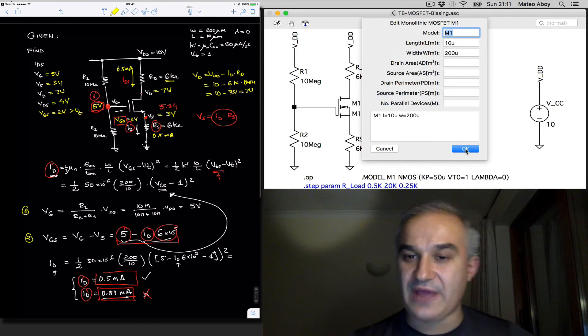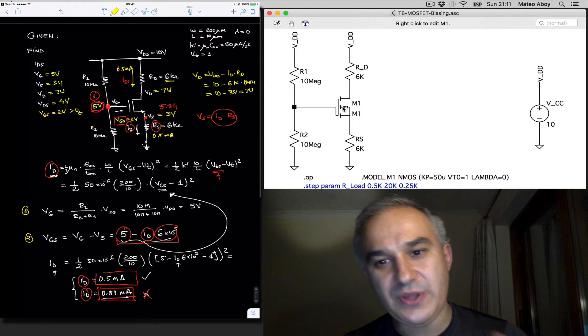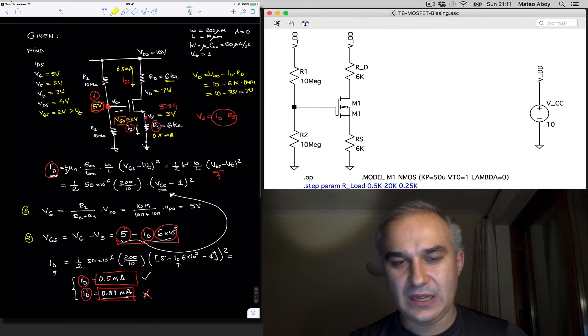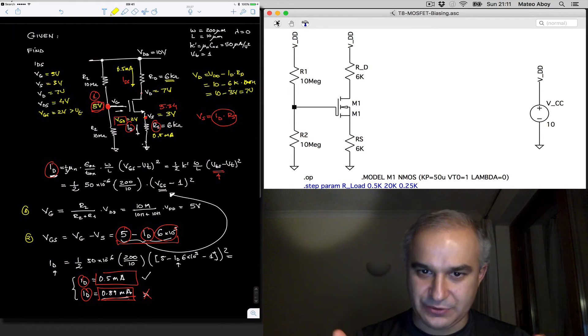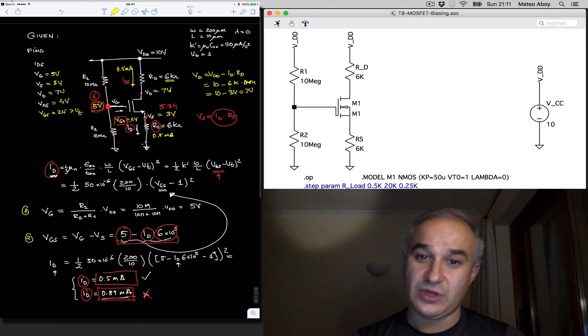So, this is what we had in our problem. With that, we are able to do an operating point analysis, and if you recall, we had this four-resistor biasing network. We had analyzed all the voltages.